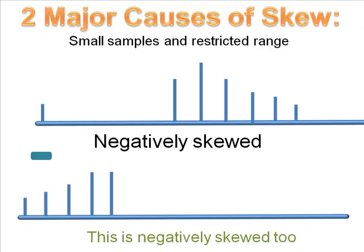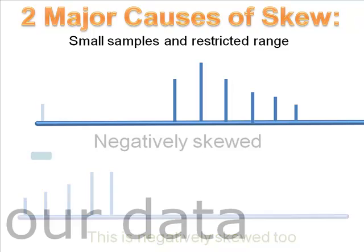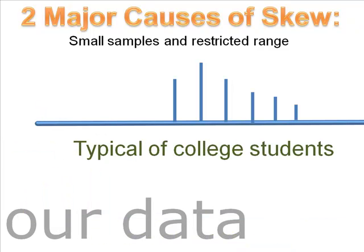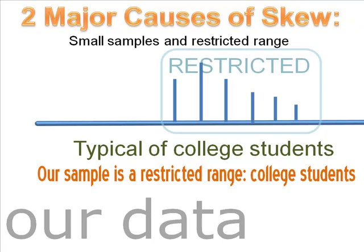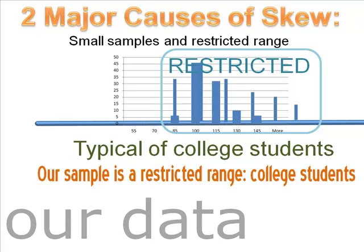The tail indicates where the outlying score is. In a sample with a restricted range, you left somebody out. When we restricted our sample to college students, we also restricted the range of IQs — we left out some of the lower scores. Our distribution of IQs is typical of college students: a nice, symmetrical, normal curve, but missing some of the lower scores.